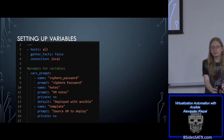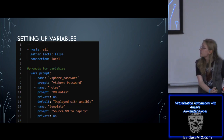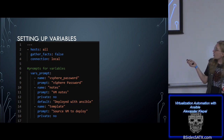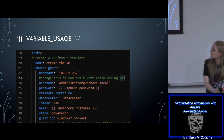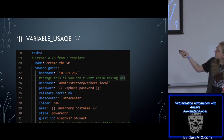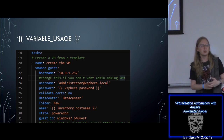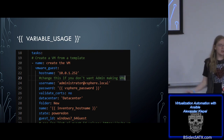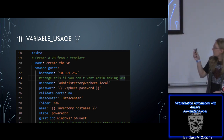Ansible's playbooks are written in YAML format, so they're really easy to read and write. You're able to declare variables and prompts for variables so you don't have to leave your password in plain text, which is great. This is how you use those variables — with curly braces. Here's the vSphere Guest Ansible module, which comes completely pre-installed whenever you install Ansible. You don't have to configure it a special way or download other packages — you download Ansible, you get all of it.